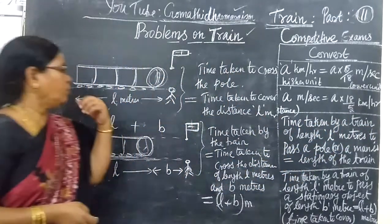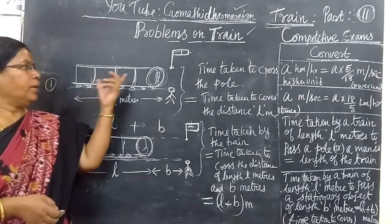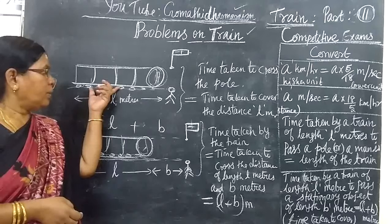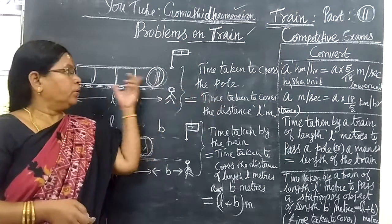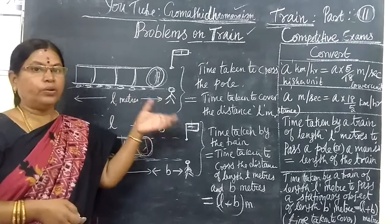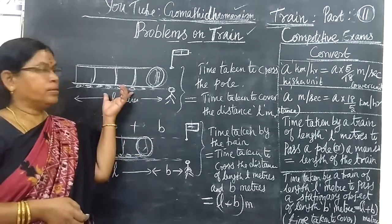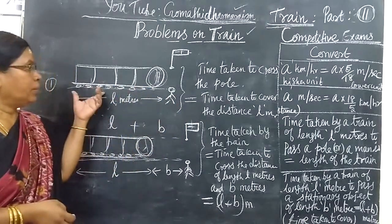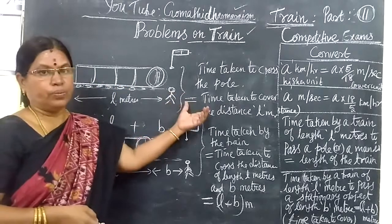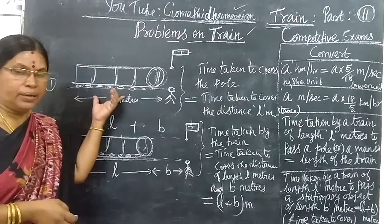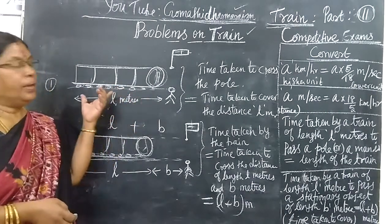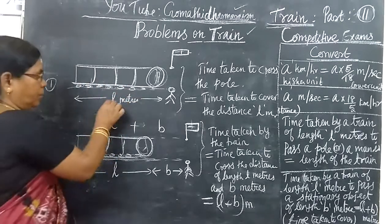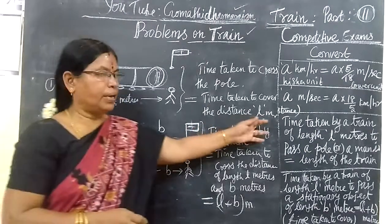Next formula: if you are given a train of length L meters crossing a pole or a man, the train crosses completely. You want to find the time taken by the train to cross the pole. The time taken equals the time taken by the train to cover a distance of L meters. So the distance is L meters.